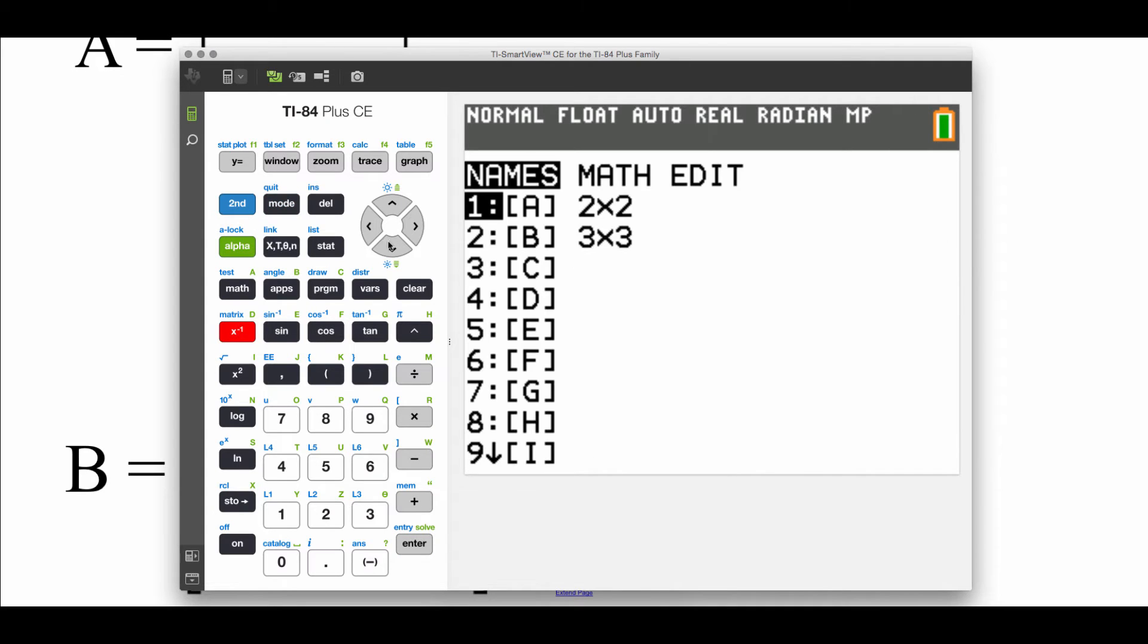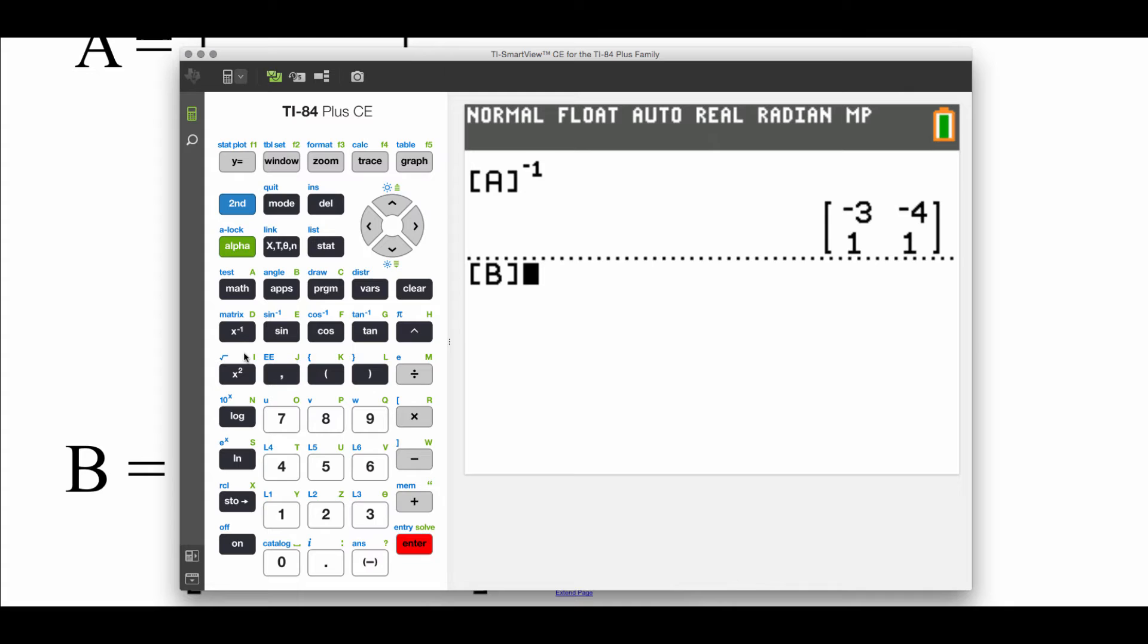Second matrix. This time we're grabbing matrix B. Hit our inverse button, enter, and there is our inverse three by three matrix.